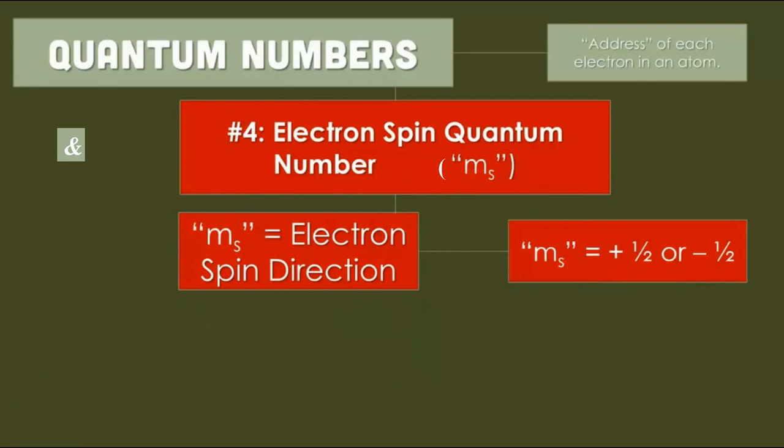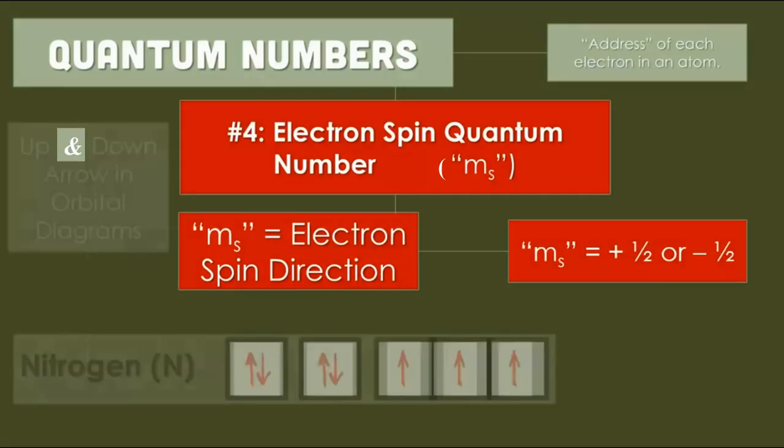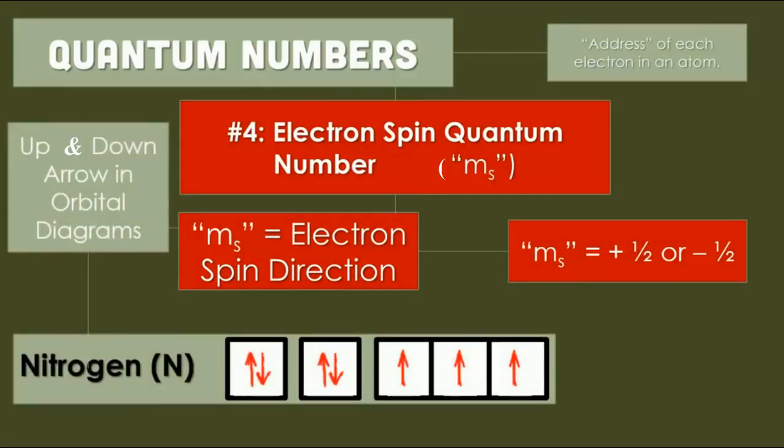Fourth quantum number is electron spin quantum number. It tells about the electron spin direction and is denoted by plus half and minus half. This quantum number refers to the orientation of the spin of an electron. One clockwise and other anticlockwise spin.